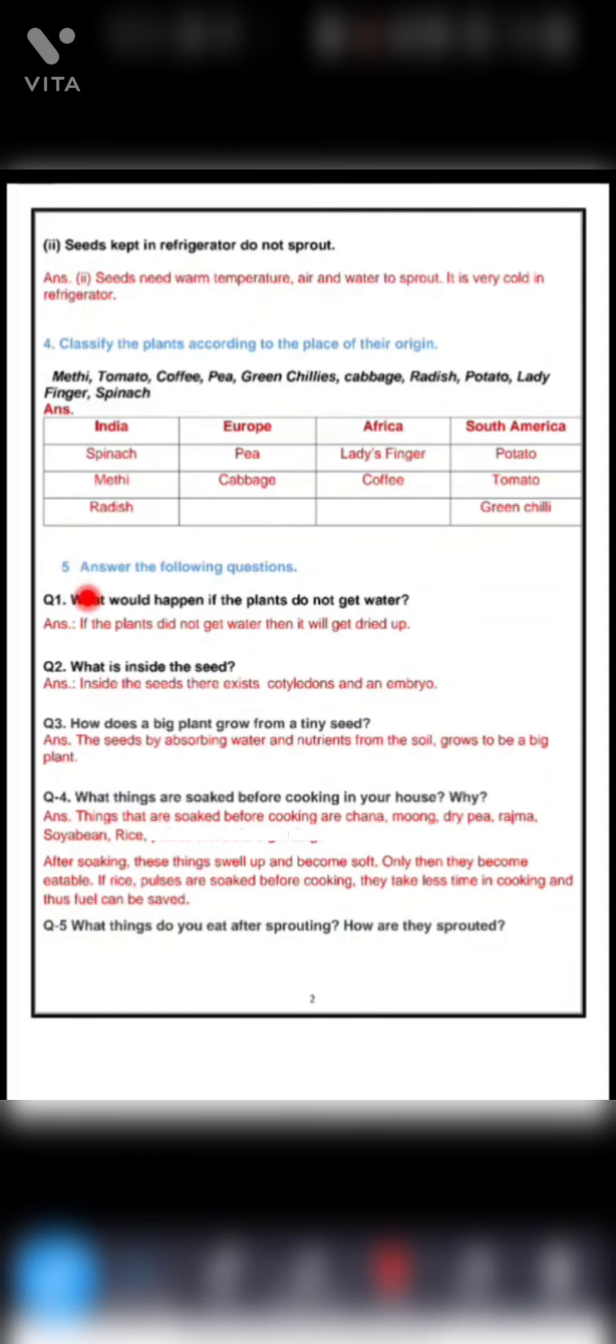Then fifth one, answer the following questions. First one, what would happen if the plants do not get water? If the plants did not get water, then it will get dried up. Then what is inside the seed? Inside the seed there exists cotyledons and an embryo.